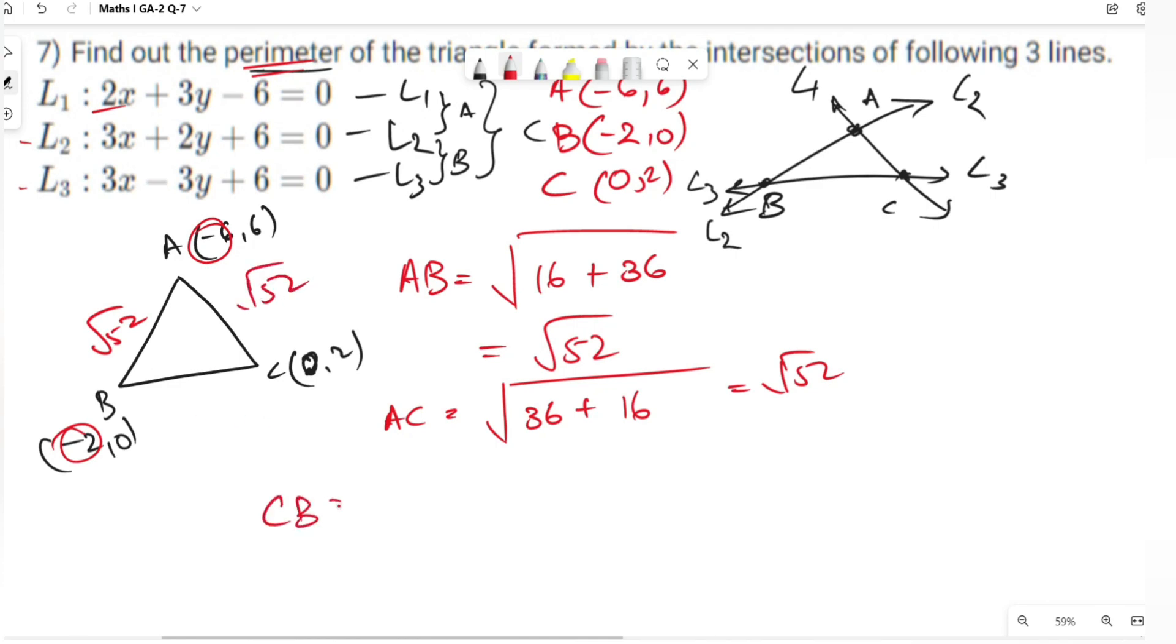The length of CB is: (minus 2 minus 0) whole square is 4, plus (2 minus 0) whole square is 4, which equals under root 8.